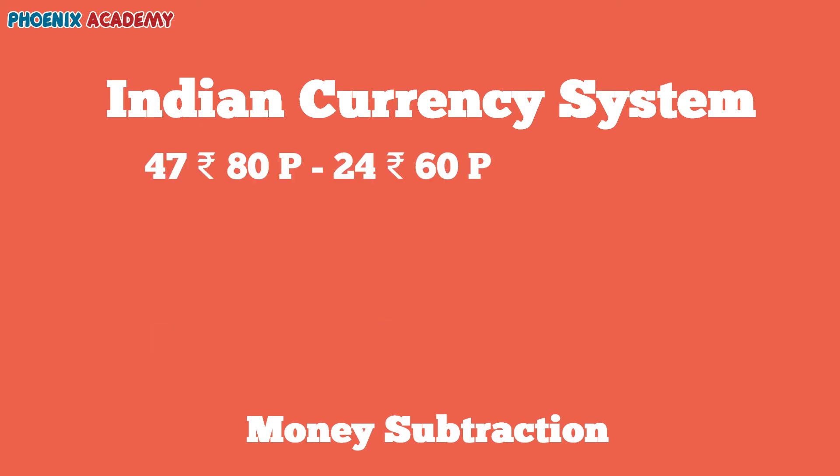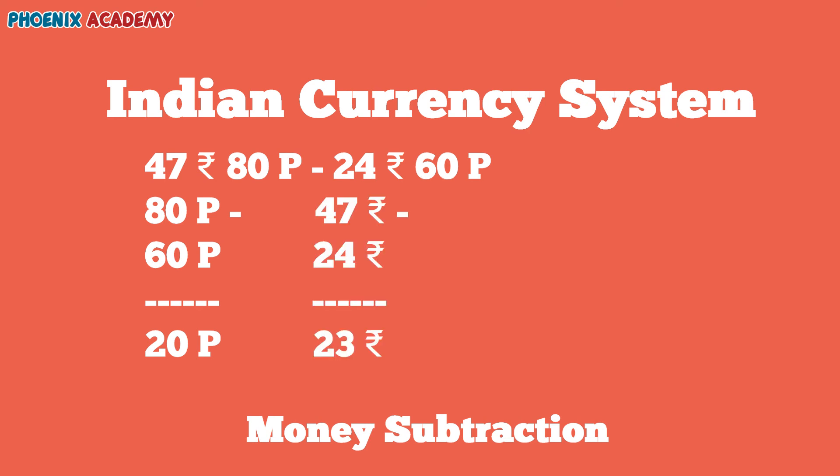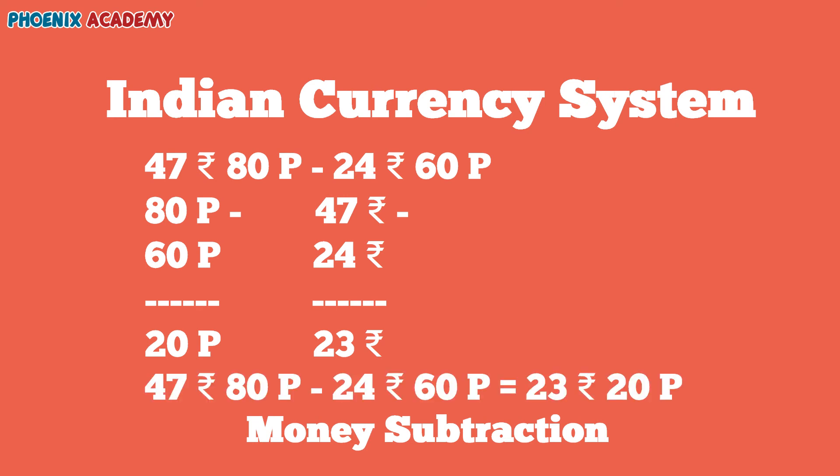Let us subtract 24 rupees 60 paise from 47 rupees 80 paise. Let's subtract paise: 80 minus 60, we will get 20. Then 47 minus 24, we will get 23. So the difference of 47 rupees 80 paise and 24 rupees 60 paise is 23 rupees 20 paise.